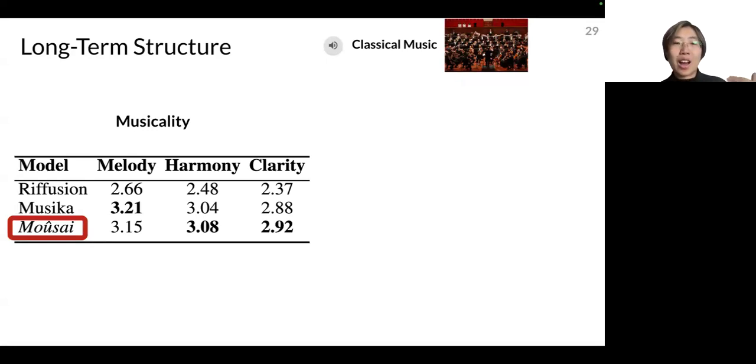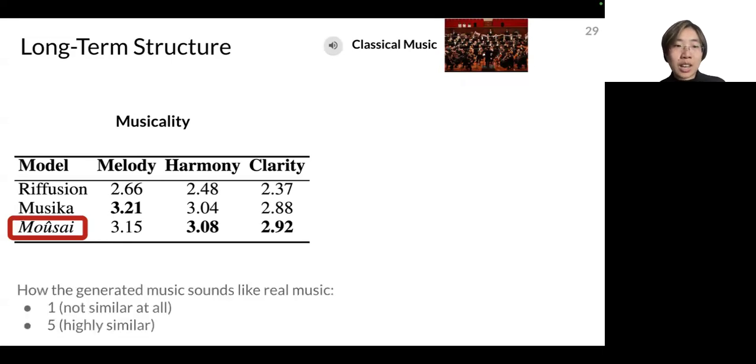Moreover as we can see as we have heard in our classical music example before, where we have human annotators to annotate between one and five to check how the generated piece is like real music and we see that it's melody, harmony, clarity, overall quality.